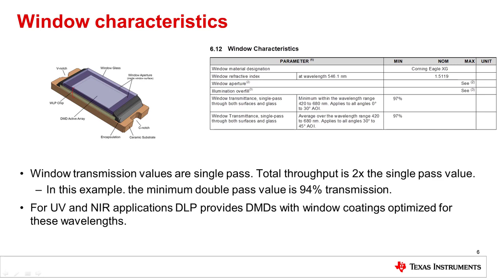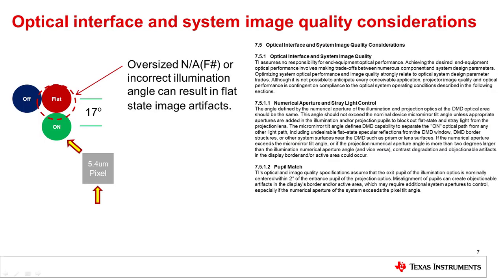The coating transmission will roll off outside the visible range. Our UV and NIR devices have window transmissions optimized for those applications. It is recommended to start with a telecentric projection design and set the illumination and projection F-number to match the F-number as defined by the tilt angle of the device. For example, a 17 degree device will have an F-number of F1.7 and an illumination angle of 34 degrees.